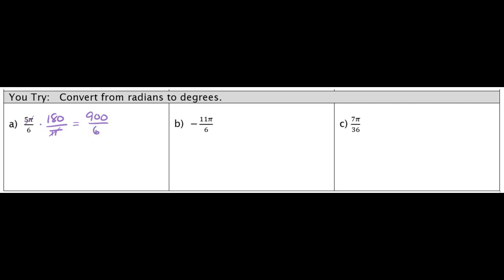And then 6 is the only thing left in the denominator. And then if I divide 900 by 6, it gives me 150.